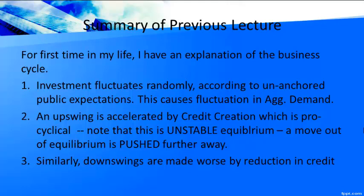I have been studying it since the 1970s, but this time we have an explanation of why the business cycle occurs. Basically, investment fluctuates randomly because of public expectations. Public expectations can go up and down without any reason — they are unanchored, not rational, not tied to past events. Investment is part of aggregate demand, so when it fluctuates, aggregate demand fluctuates.